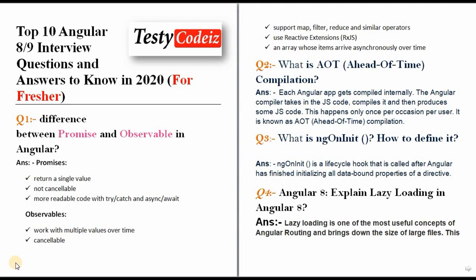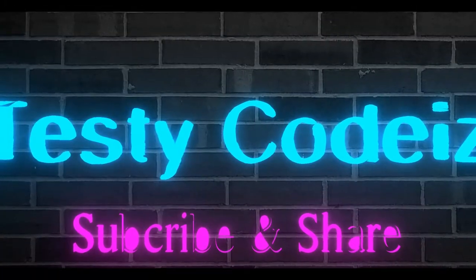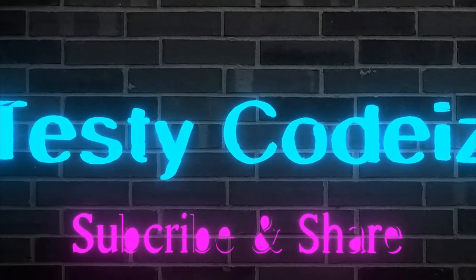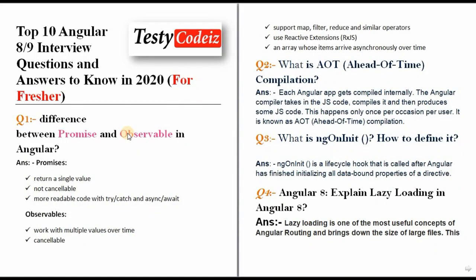The first question is: what is the difference between Promises and Observables in Angular 7, 8, and 9? I want to give the answer in Hindi because mostly our people want to learn in Hindi and this channel is totally based on Hindi tutorials. So let's get started in Hindi language.